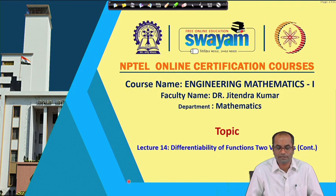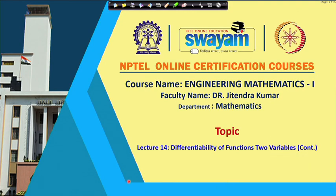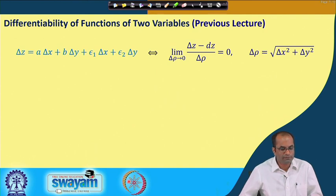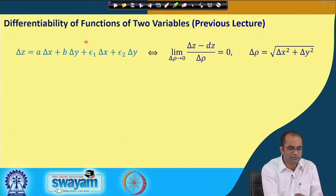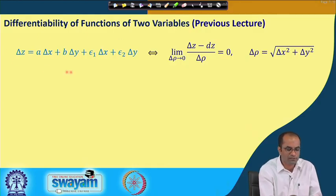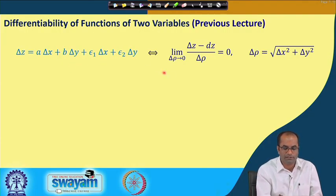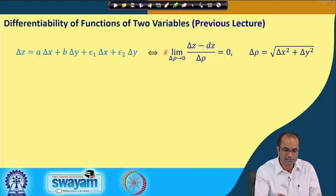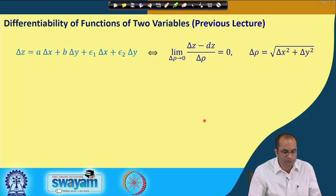Welcome back to the lectures on Engineering Mathematics 1, this is lecture number 14. We will continue the differentiability of functions of two or several variables and there will be many worked problems today. In the previous lecture we observed that the equivalent definition of differentiability expresses delta z in terms of a·delta x, b·delta y, and epsilon·delta x plus epsilon2·delta y, and if this limit equals 0 then the function is differentiable.